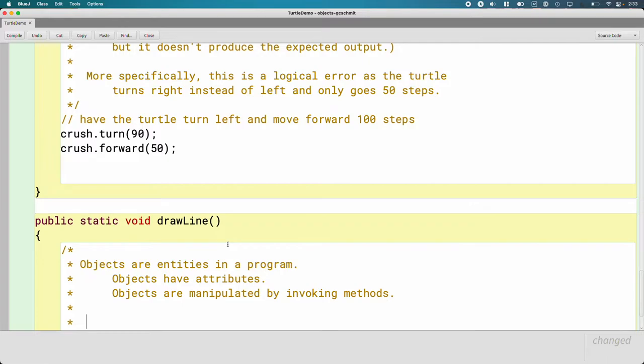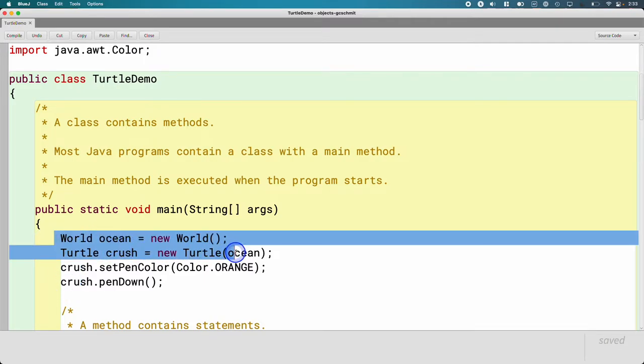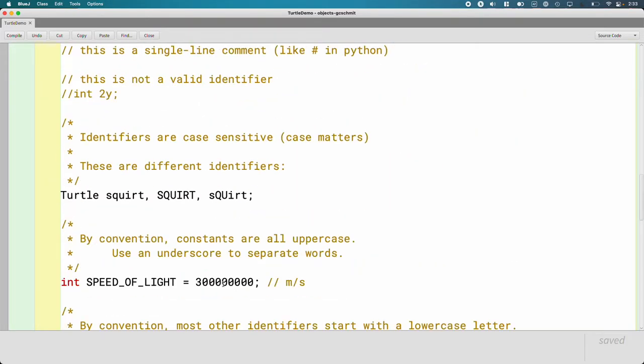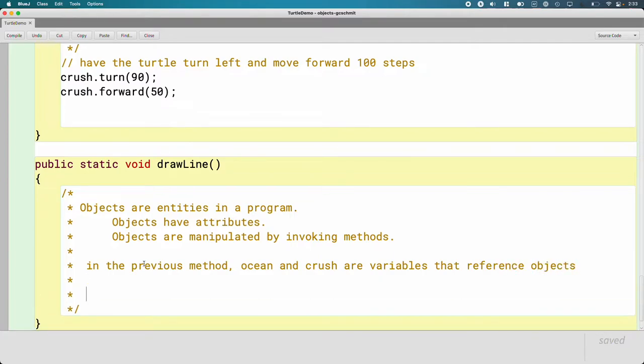So while objects are entities in a program isn't particularly helpful, I think about thinking like objects have attributes. Objects are manipulated by methods. That's a little bit more helpful. I've tried to be very careful with my language. And so if I scroll back up to here where we wrote this previous code and we had these two lines with ocean and crush, I tried to choose my words carefully and say things like, and I'm going to type that here. In the previous method, ocean and crush are variables that reference objects.